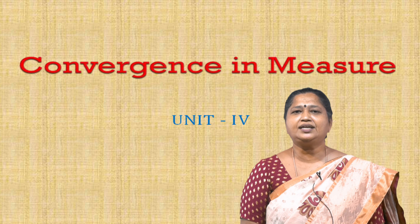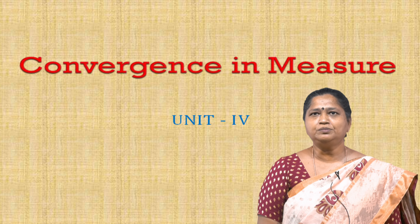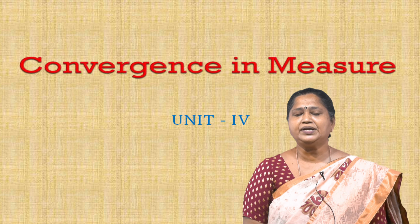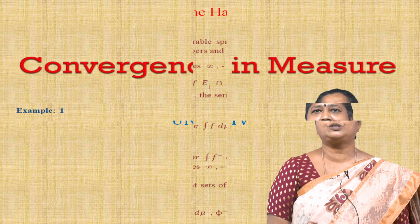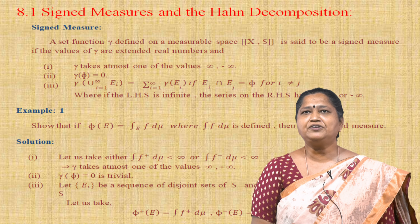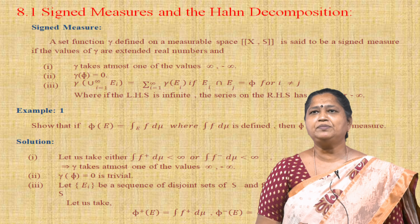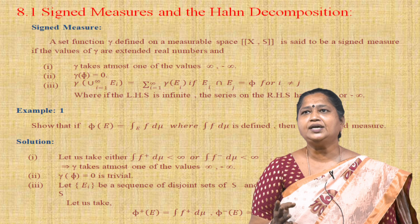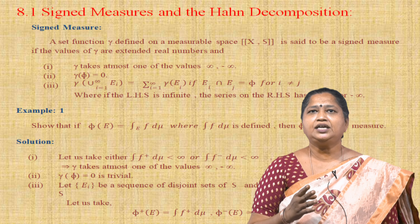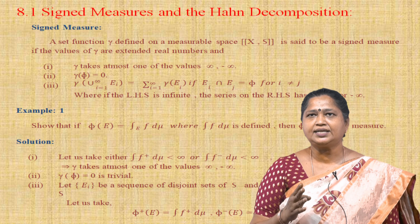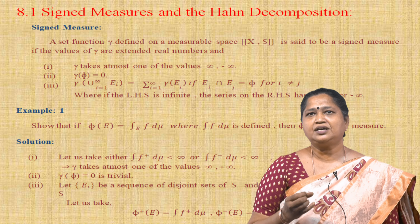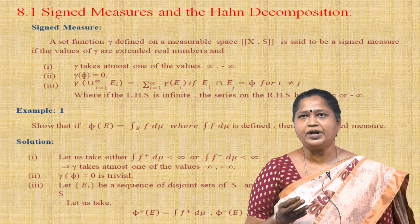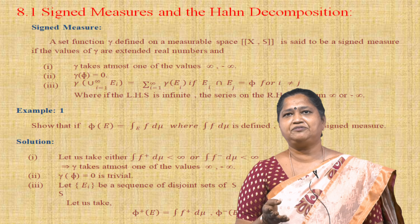Measure is nothing but the generalization of length, volume and areas. Signed measure is nothing but the generalization of measure which allows the negative values also. What is signed measure? A set function ν defined on the measurable space (X, S) is said to be a signed measure if the values of ν are extended real numbers and satisfies three conditions. The first one: ν takes at most one of the values +∞ or −∞.